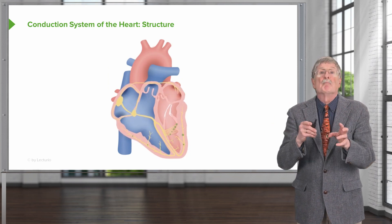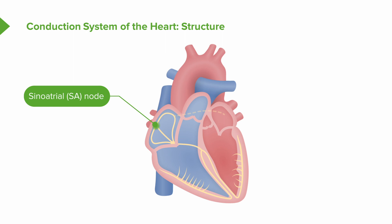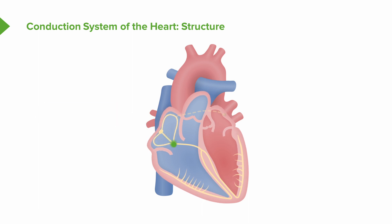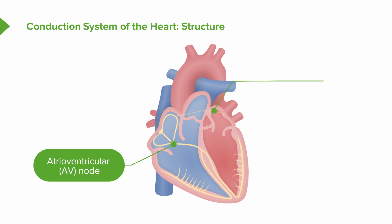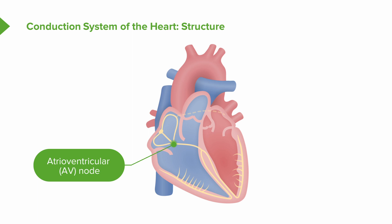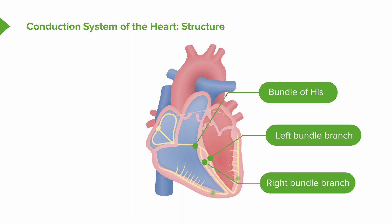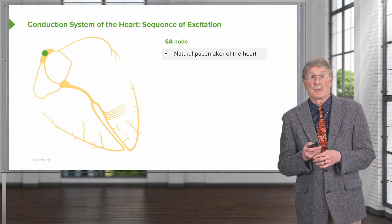Let's look at the individual components of this system. First is the sinoatrial node, which connects through ill-defined internodal tracts that bring the signal down to the atrioventricular node. To entrain the left side of the heart as well, we have a Bachmann's bundle that goes out of the sinoatrial node and crosses over into the left atrium. Now we've got the right and left atrium beating together. The atrioventricular node will hold the signal for just a brief moment, allowing the atrium to contract and eject an additional 10% to 15% of volume into the left ventricle before it contracts to pump blood out. From the AV node, that signal goes out the bundle of His and into the right and left bundle branches, eventually ramifying with the individual cardiac myocytes.